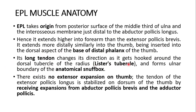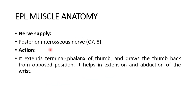Its long tendon changes direction as it gets hooked around the dorsal tubercle of the radius — the Lister's tubercle — and forms the ulnar boundary of the anatomical snuff box. There exists no extensor expansion on the thumb. The tendon of the extensor pollicis longus is stabilized on the dorsum of the thumb by receiving expansions from the abductor pollicis brevis and the adductor pollicis. Its innervation is the posterior interosseous nerve, a continuation of the radial nerve; the nerve roots are C7 and C8.